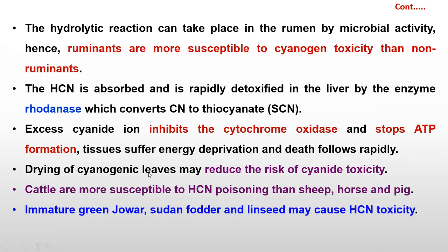Drying of cyanogenic leaves may reduce the risk of cyanide toxicity. Once we dry leaves and green fodder, there may be less chance of cyanide toxicity. Ruminants or cattle are more susceptible to cyanide poisoning than sheep, horses, and pigs.